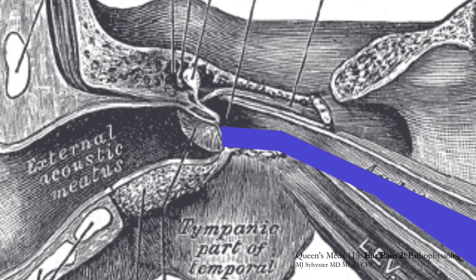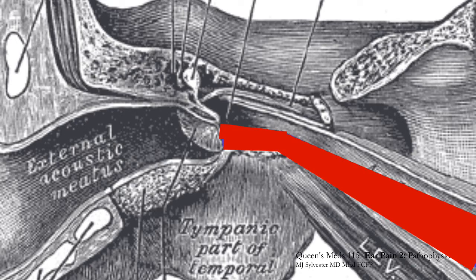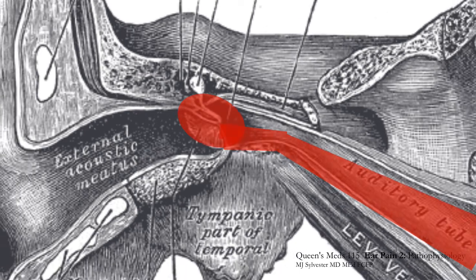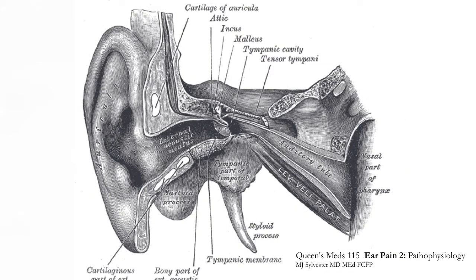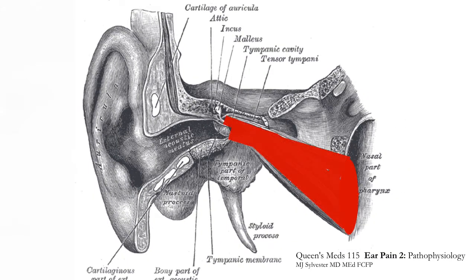Before you know it, you have a pool of fluid accumulated in the middle ear — a middle ear effusion — and you have your second ingredient for a middle ear infection. But you don't have a middle ear infection until you have the third ingredient: inflammation. Given enough time, bacteria will find this warm, protein-rich fluid in your middle ear cavity and will accumulate. Your immune system will react and you'll have inflammation and increasing pressure in this sealed middle ear cavity.